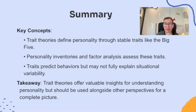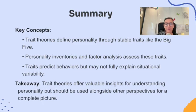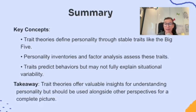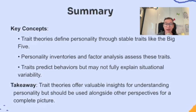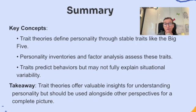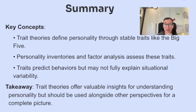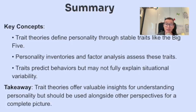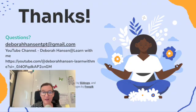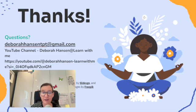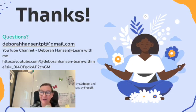Let's summarize what we've learned from the second CED question of 4.5, Social Cognitive and Trait Theories of Personality. Trait theories define personality through stable traits like the Big Five. Personality inventories and factor analysis are used to assess these traits. Traits predict behavior but don't fully explain situational variability. The takeaway is that trait theories offer valuable insights for understanding personality but should be used alongside other perspectives for a complete picture. Hopefully you found that helpful — if you did, hit the like button please.